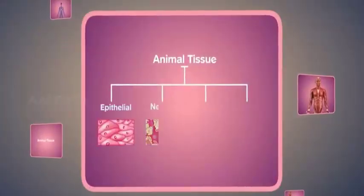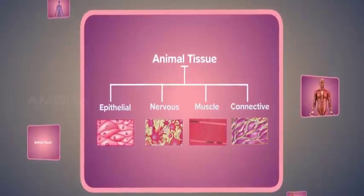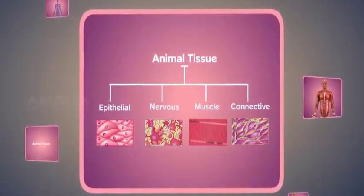Things to remember. Animal tissues are grouped into epithelial, nervous, muscle, and connective tissues.